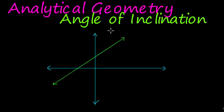The angle of inclination is the angle made with the right side of the x-axis. Okay, so here we have a line.